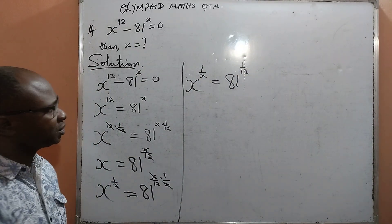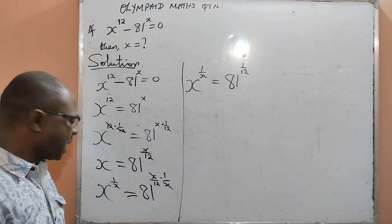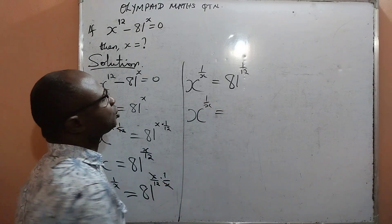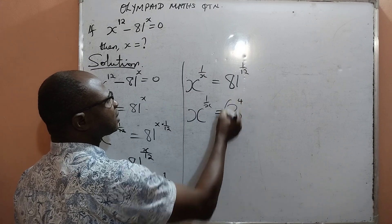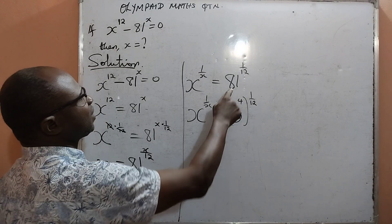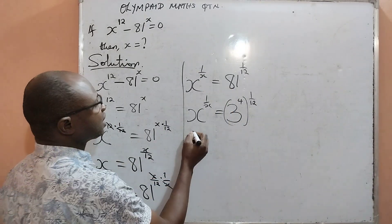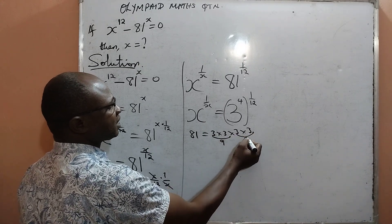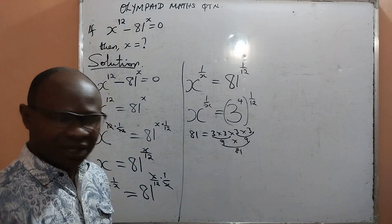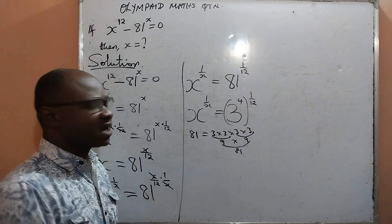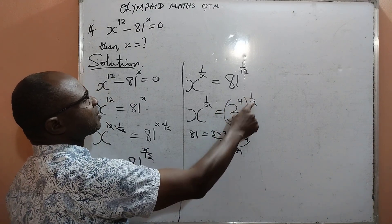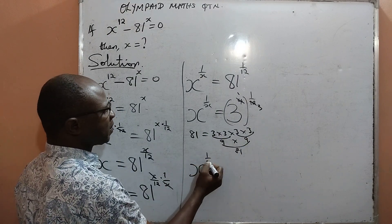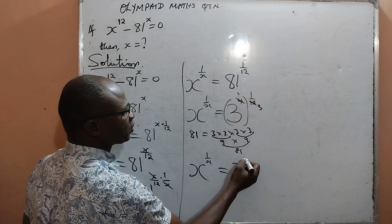Moving forward, I want to put 81 in index form, preferably in base 3. That means I will have x raised to the power 1 over x is equal to 3 raised to the power 4, then multiplied by 1 over 12. 81 is represented as 3 raised to the power 4, because 81 equals 3 × 3 × 3 × 3: 3 × 3 is 9, and 9 × 9 gives us exactly 81. By the exponential law, 4 multiplied by 1 over 12 gives 4 over 12, which cancels to 1 over 3, so we have x raised to the power 1 over x equal to 3 raised to the power 1 over 3.